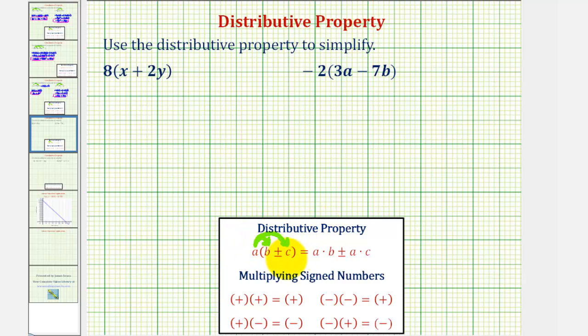So we multiply each term inside the parentheses by a. Looking at our first example, we would read this as 8 times the quantity x plus 2y. To apply the distributive property, multiply both terms inside the parentheses by 8.